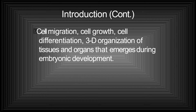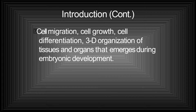This slide is showing the introduction. In this, how cell migration occurs — the cell consists of various growth forms. Sometimes the cell grows bigger. A single cell does a lot of work for the whole human being. Then there is cell differentiation, meaning cells perform various types of functions. There is 3D organization of tissues and organs that emerges during embryonic development — that is the mitosis and meiosis process in which the cell divides and re-divides, finally converting into daughter cells.